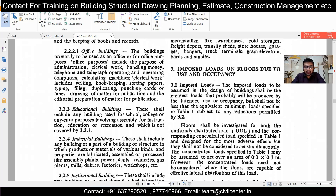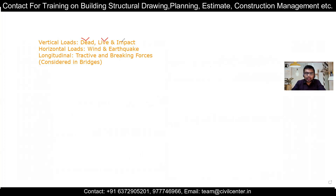We will also briefly discuss impact load. Basically, if people move or soldiers march in a specific rhythm, it produces an impact load. The load on the beams of a lift can also produce impact load. For impact load, we simply multiply the live load by a specific multiplier or percentage factor, the value of which is found in the code. At minimum you should know that impact load exists and is given by a live load multiplier.